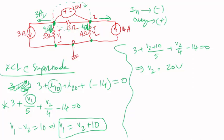Then if I go back to V1 is equal to V2 plus 10. So it's 20 plus 10. That means V1 equals to 30 volts.